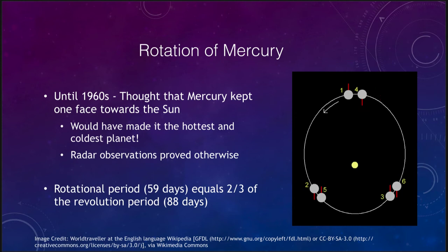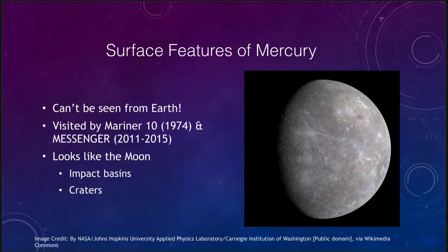We can't really see Mercury's surface features from Earth — it's always too close to the Sun, so we have to look through a lot of atmosphere and can never get clear images even with very powerful telescopes. It wasn't until 1974 when the Mariner 10 spacecraft flew by and gave us the first images of the surface — the first time we could actually see it.